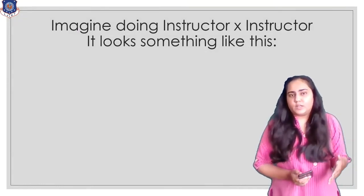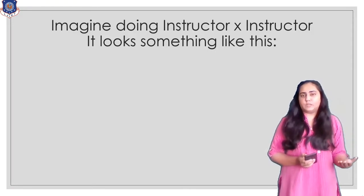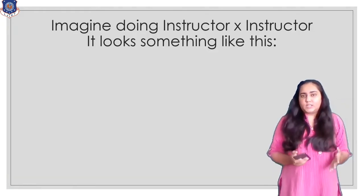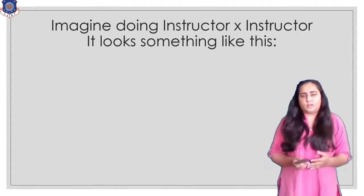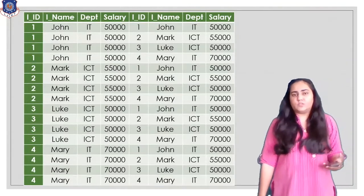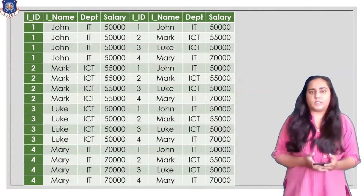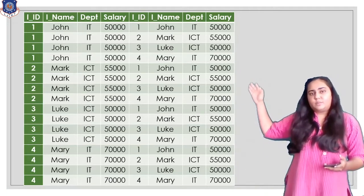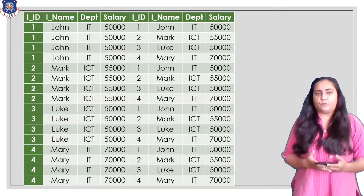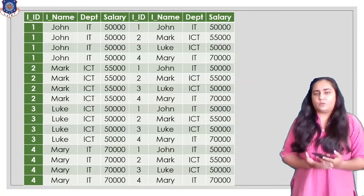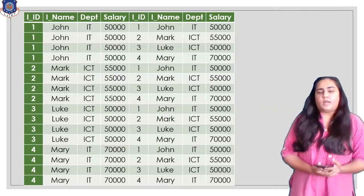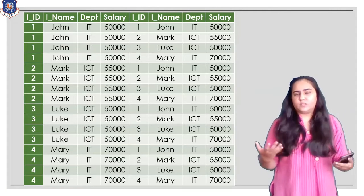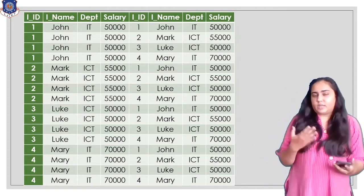First, think about what the result would be if you took a Cartesian product of a table with itself — that is, taking the Cartesian product of instructor with instructor itself. Because the instructor table contains four rows, the result has 16 rows, where each row of instructor is combined with all four rows. ID 1 is combined with 1, 2, 3, 4; ID 2 with 1, 2, 3, 4; and so on. The result has 16 rows and 8 columns since the original table had 4 columns.